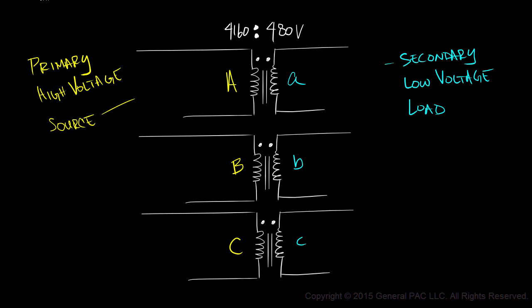Since we're illustrating a delta Y transformer connection, let's start by connecting our secondary windings in Y. We're going to connect winding A, winding B and winding C together. And for the sake of simplicity, we're going to ground the neutral wire. This is a Y grounded transformer connection.